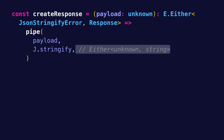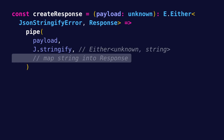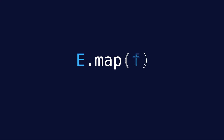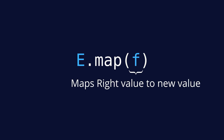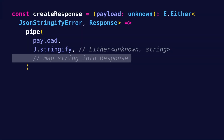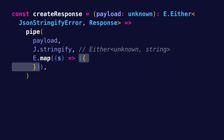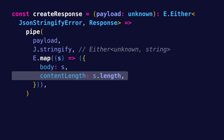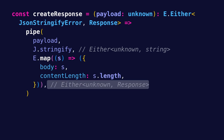The next thing that we want to do is to map that string into the response object. This can be accomplished using the Either.map util, which takes a function that maps the Either's right value to a new value. Of course, this mapping is done only if we have an Either Right — if we have a Left, map does nothing. So going back to createResponse, we can map the stringified payload into the response object, that is, an object with a body and a content length. At this point, we have an Either unknown or Response.